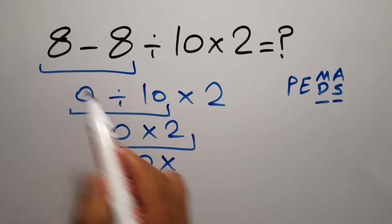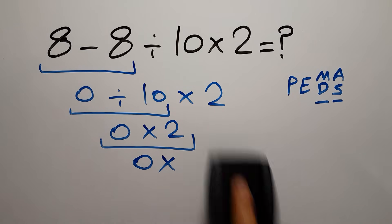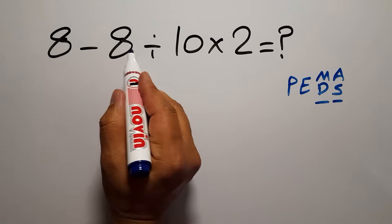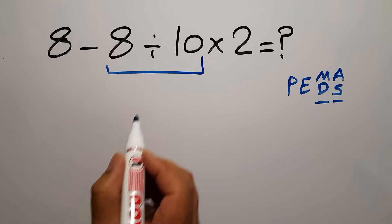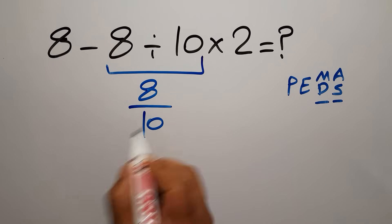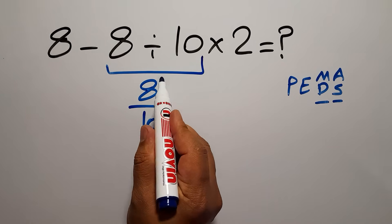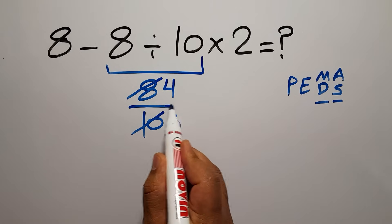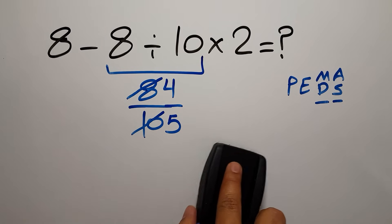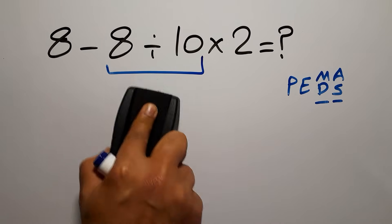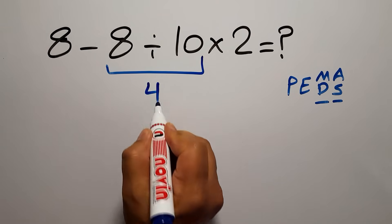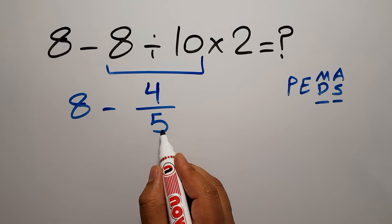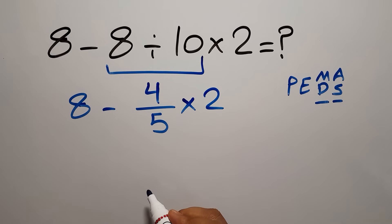8 divided by 2: we can write 8 over 10. 8 divided by 2 gives us 4, and 10 divided by 2 gives us 5, so we have 4 over 5. So we have 8 minus 4 over 5, then times 2.